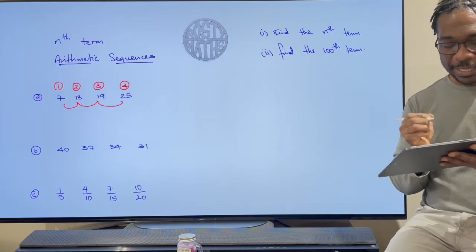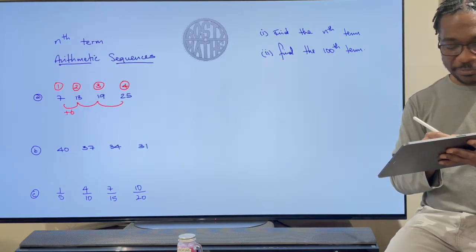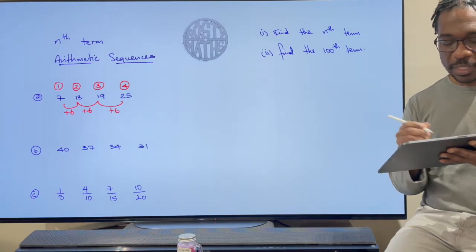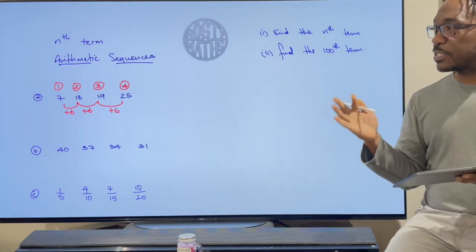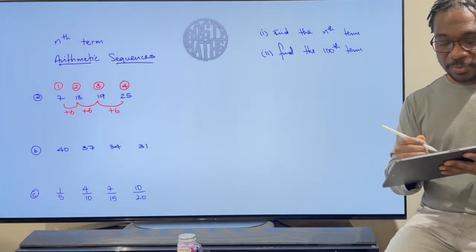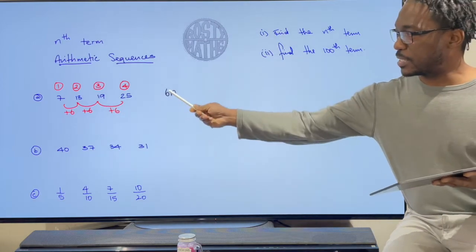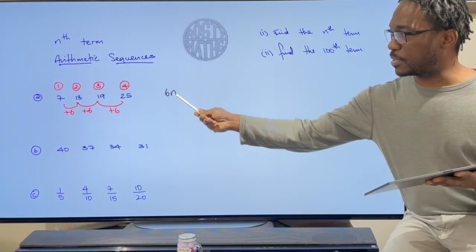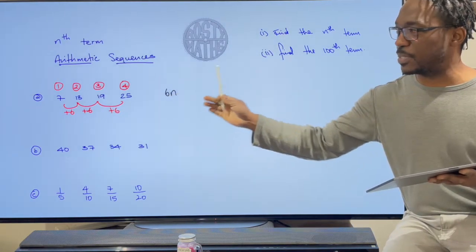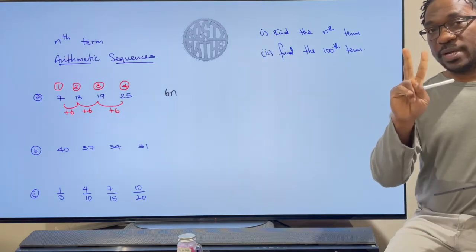Let's see how we find the nth term. Job number one: see how your sequence is going up or down. In this case, my sequence is adding six every time. Since we're adding six every time, immediately we know that this sequence will have 6n in it, because six times the position of the term is going to take us somewhere.